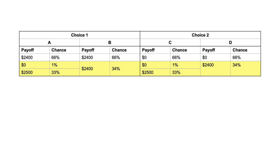You will similarly be indifferent between bet C and D in choice 2, winning $0 no matter what. Suppose instead that a number between 67 and 100 is generated, but you don't know which. If you prefer A to B, you should also prefer C to D — in each choice, you effectively face the same bet. Now suppose you don't know what number will be generated. If the ticket is between 1 and 66 you are indifferent between the options, but if between 67 and 100 is drawn, you prefer A and C. You do not prefer B or D in either range, so you should not prefer B or D when the ticket number is unknown.